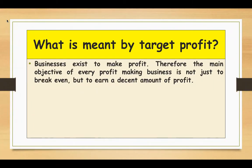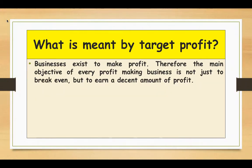At breakeven point, the sales revenue is only able to cover the total cost — that is fixed cost plus variable cost. The company will make no profit and no loss at breakeven point. After reaching the breakeven point, the next step for a business is to think of making profit.